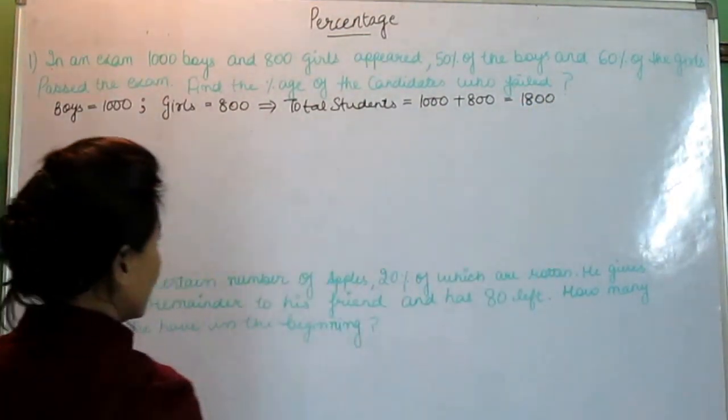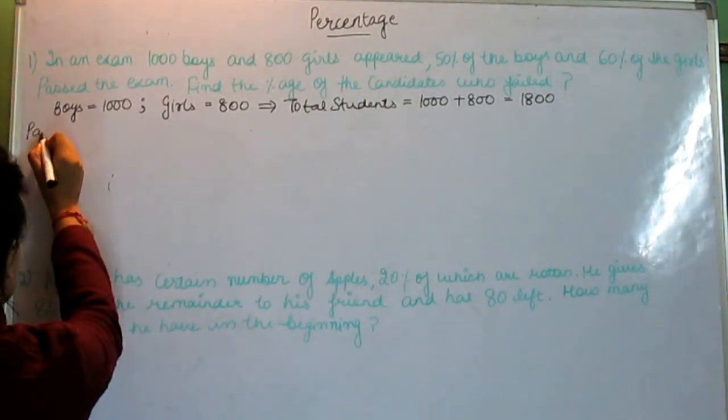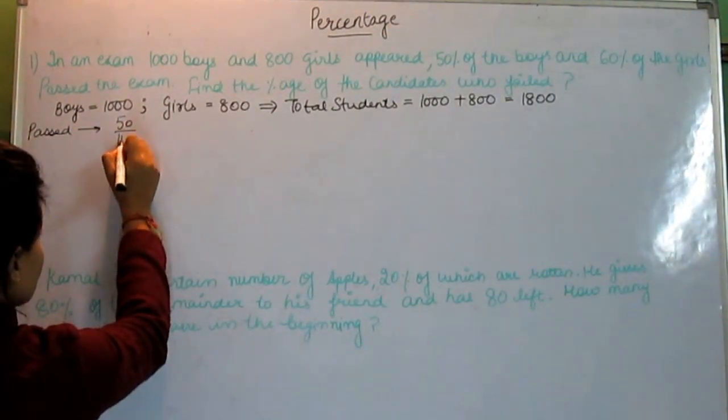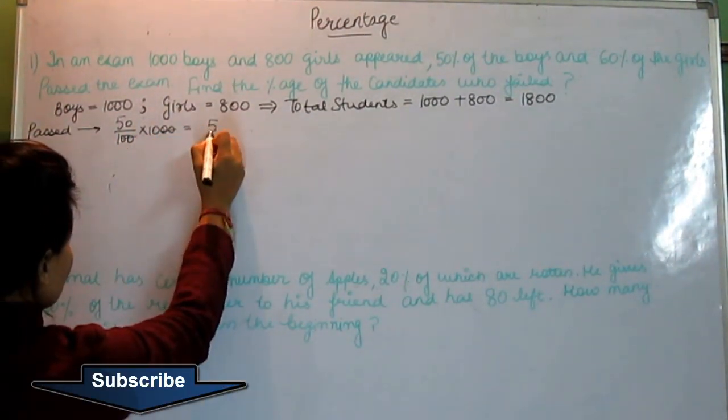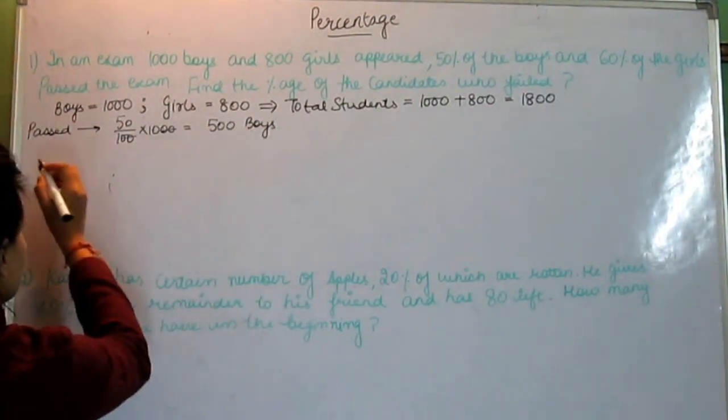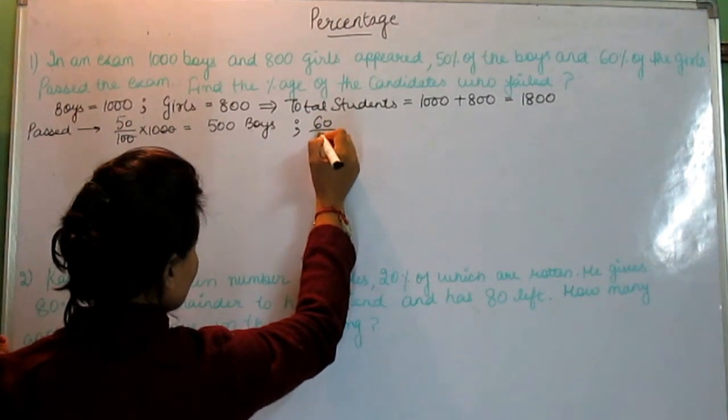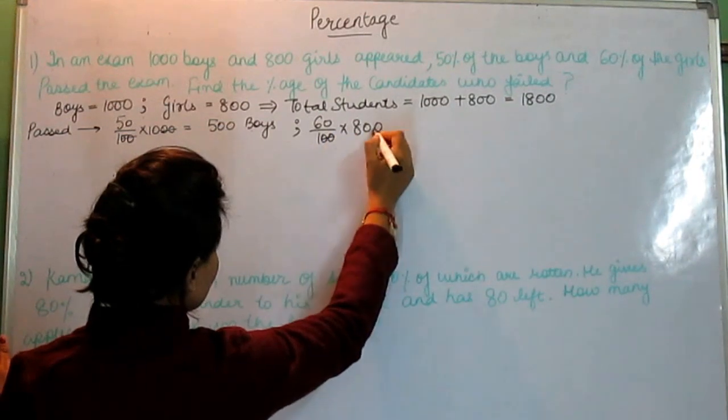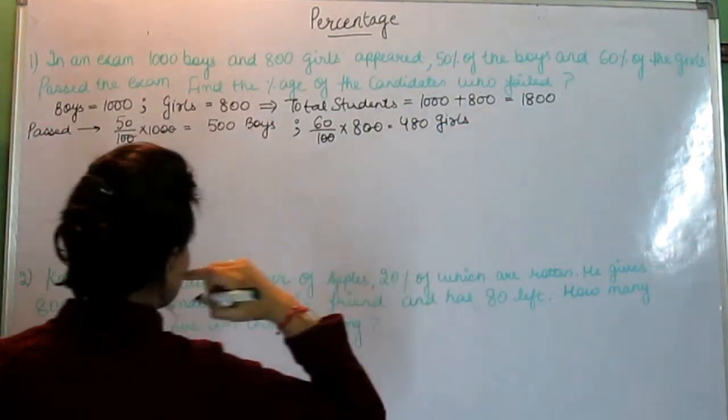50% of the boys passed, it means 500 boys have passed. And 60% of the girls, number of girls were 800, so 480 girls passed.